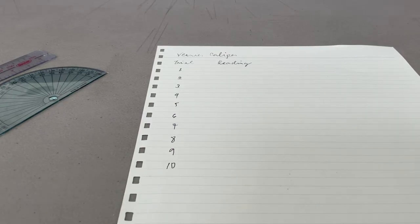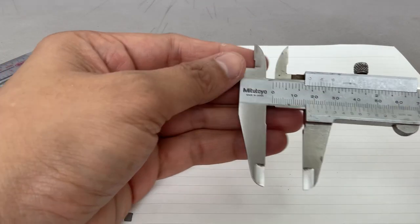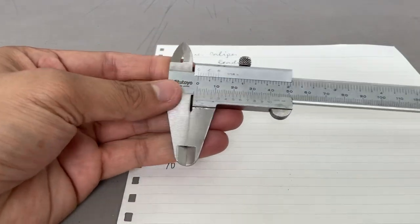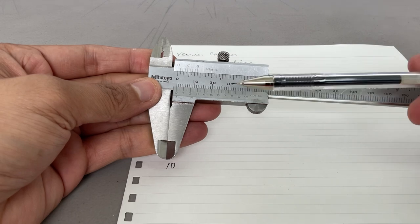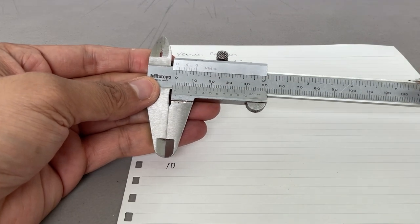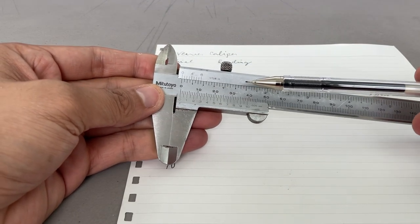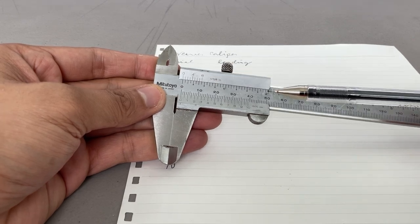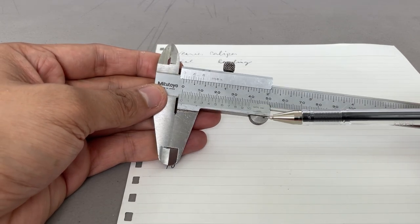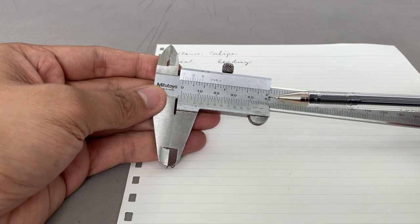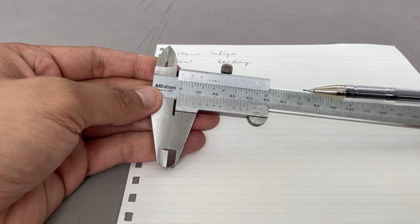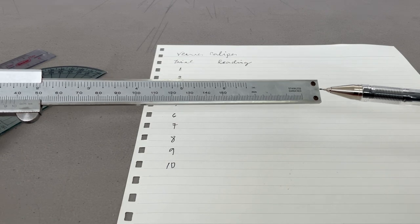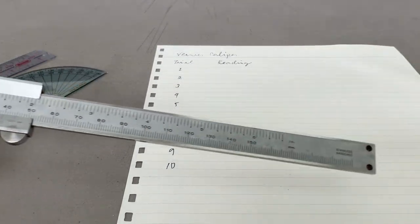Hello guys, so how to use the vernier caliper. This is your vernier caliper. There is the main scale here, there is an inches scale here, and there's a millimeter scale here. So the main scale, the vernier scale, this is called the vernier scale.